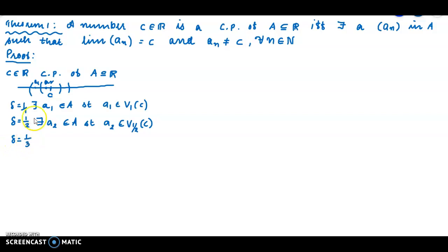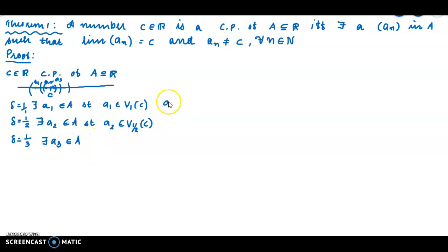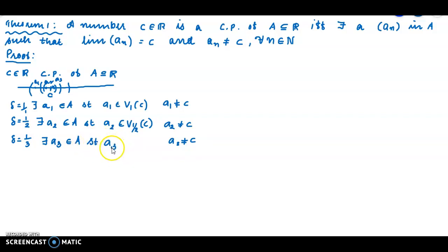Similarly, for delta equal to 1/3, we select a point A₃ element of V₁/₃(c). Hence there exists A₃ in V₁/₃(c). So we have points A₁, A₂, A₃ in neighborhoods V₁(c), V₁/₂(c), V₁/₃(c) respectively, such that A₃ is element of V₁/₃(c).